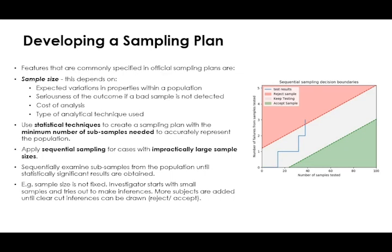In cases where you have an impractically large sample size, you can apply sequential sampling — this means you keep examining subsamples of the population until you reach a statistically significant result. You start with a small sample and try to make inference, adding samples until you can make a clear-cut decision to reject or accept your sample. You can use statistical techniques to create a sampling plan with the minimum number of subsamples needed to accurately represent the population.